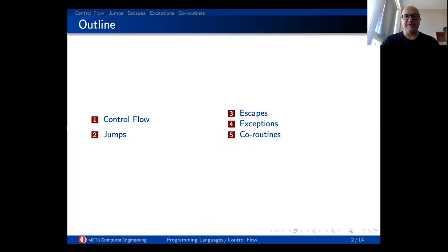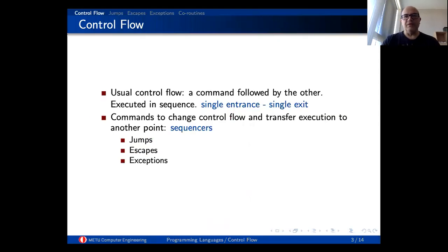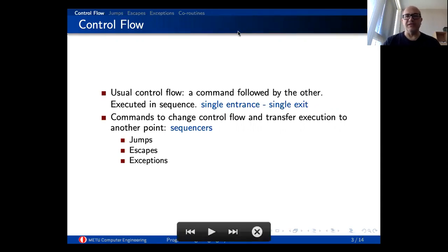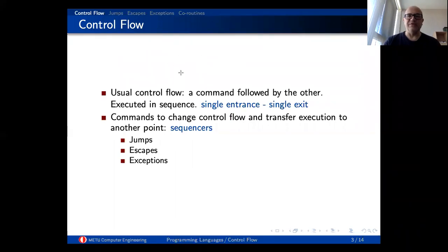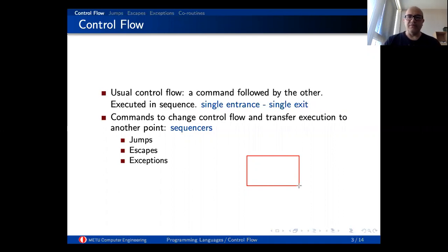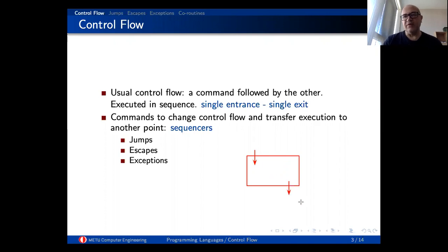We have the usual control flow in imperative languages, which is basically single entrance, single exit, meaning that if you have some sort of statement block, whatever it is — it can have loops, nested loops, etc. — execution enters this block and is going to leave it from only one point. This is called single entrance, single exit.